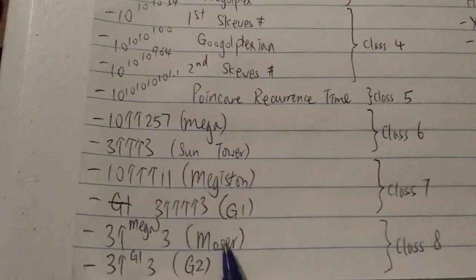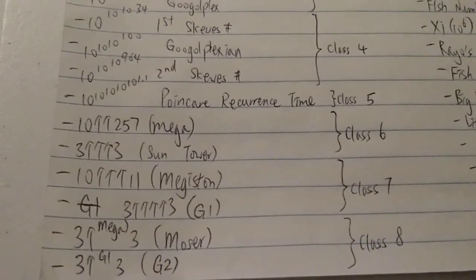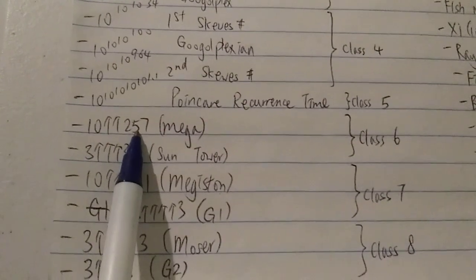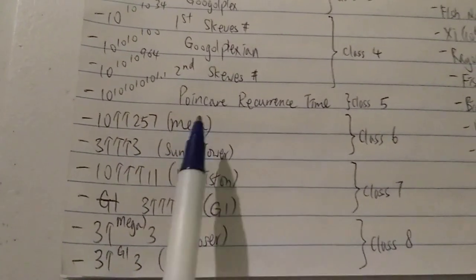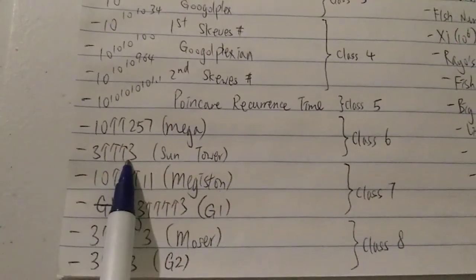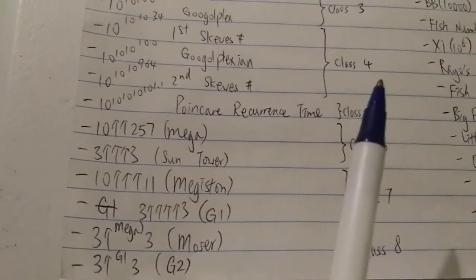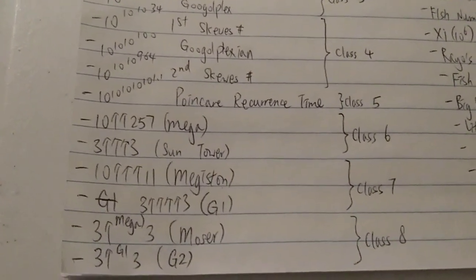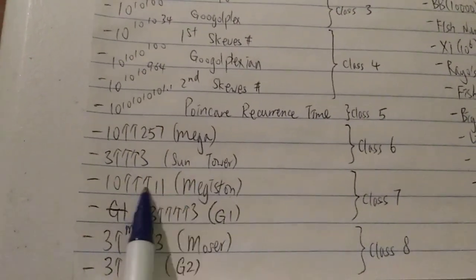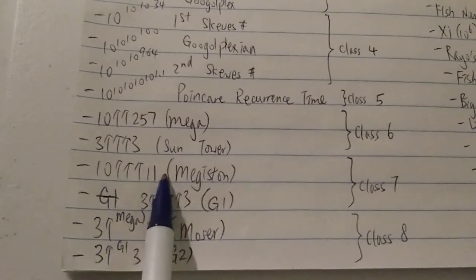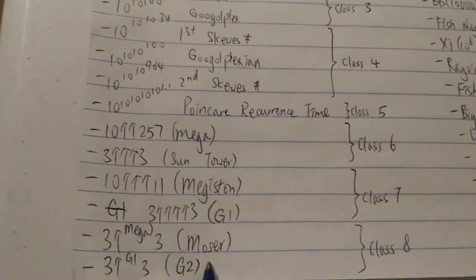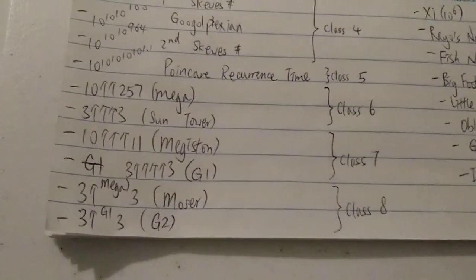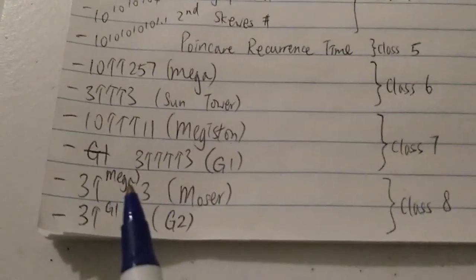Everything beyond the Poincaré recurrence time is bigger than any number in science — we're now in the realm of pure mathematics and computer science. In class 6 we have 10 double-arrow 257, called the Mega number. Next we have 3 triple-arrow 3, using Knuth's up-arrow notation — also known as a power tower, and one of the steps involved in Graham's number. Class 7 brings us 10 triple-arrow 11, known as Mega-10, and then 3 with four arrows 3, which is g1 — the first step of Graham's number.